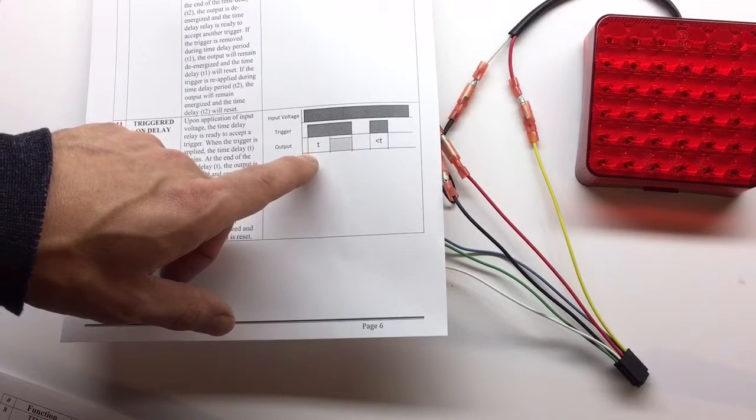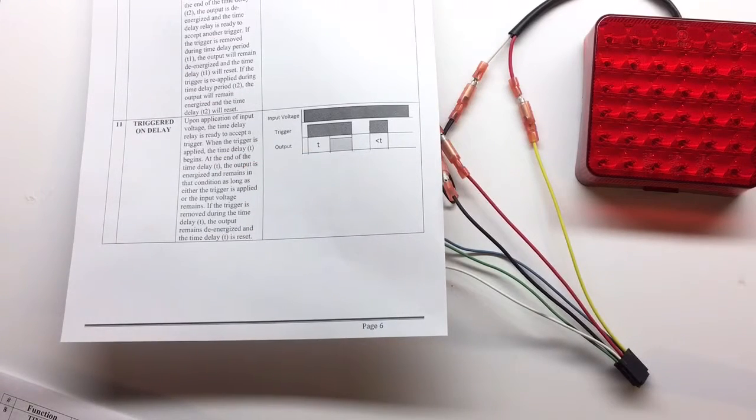So we can set up the T, for example, for two seconds, and if we hold the trigger for less than two seconds, light will not come on.